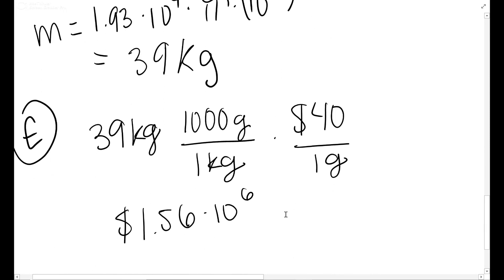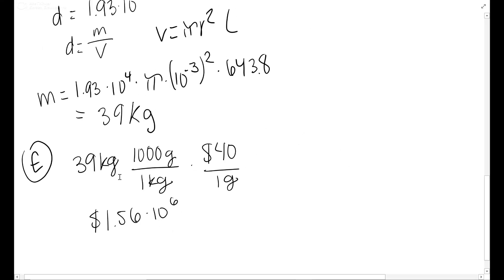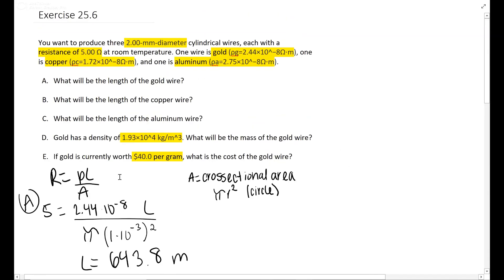And then part E wants to know what it's worth. You have this 39 kilograms and it gives you that it is $40 per gram. You've got to convert it: 1,000 grams over 1 kilogram. Kilograms will cancel out, grams will cancel out. You multiply these and you get 1.56 × 10⁶ dollars. So it is a very huge amount, which is why it's worth so much. That is how you do this entire thing very fast.